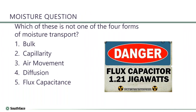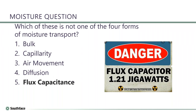Quick recap quiz: which of these is not one of the four forms of moisture movement? The four are: bulk water (liquid), capillarity (wicking), air leakage (airstream carrying humidity), and diffusion (water molecules permeating through material). The answer that is not one of them is 'flux capacitance' — critical if you're trying to travel back in time, but not a form of moisture vapor movement.